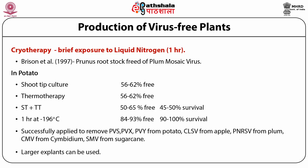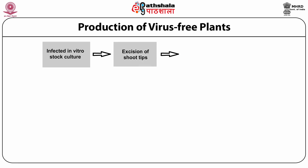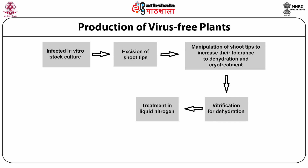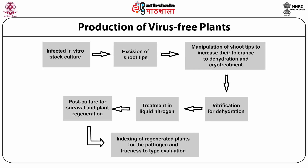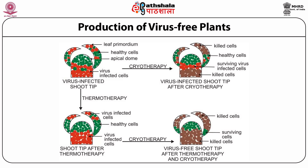Cryotherapy has been successfully applied to potato virus S, potato virus X, potato virus Y, and a number of other viruses from fruit trees. The advantage is that you can use a larger explant. The flow chart for cryotherapy: take infected in vitro stock cultures, excise the shoot tip, manipulate the shoot tip to increase tolerance by dehydration and using a cryoprotectant, subject to vitrification by dehydration, treat with liquid nitrogen, then post-culture for survival and plant regeneration, and finally index the plants.